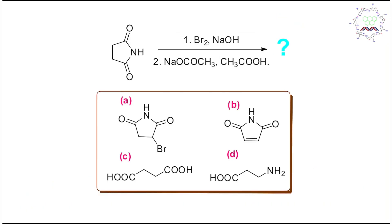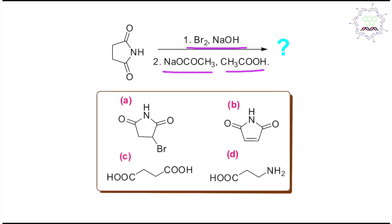Don't hesitate whether your answer is right or wrong, because self-evaluation is essential for improvement. Now I want to mention one thing — read the question a little more carefully. This is actually an amide — a cyclic amide. The conditions are: first step, bromine and alkali; second step, sodium acetate and acetic acid. If you have read many name reactions, you can guess — this is the Hofmann degradation reaction.